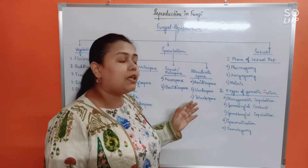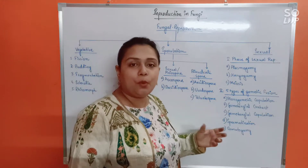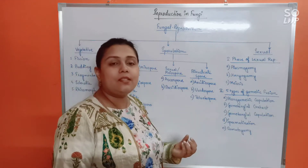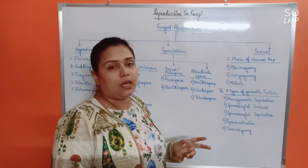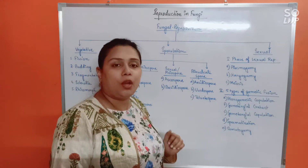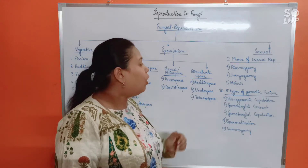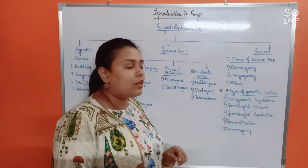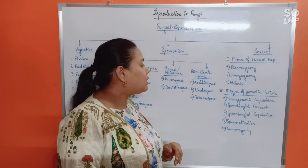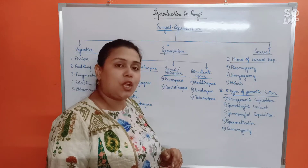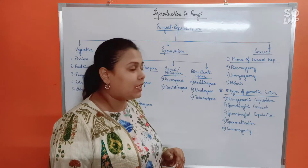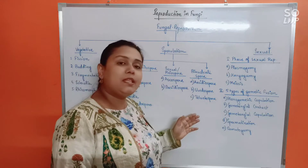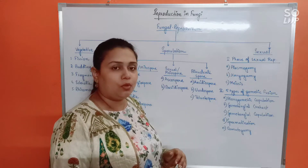There are also certain kinds of spores found in fungi which possess two nuclei rather than one. We call such spores binucleate spores. Binucleate spores in fungi are of three types: aeciospore, uredospore, and teliospore.